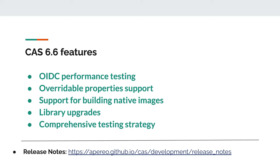Next, support has been added for system properties and environment variables to be able to override properties found in CAS configuration files. Additionally, internal rewriting of CAS components has been done to improve building of native images. And also in this release there have been many library upgrades.